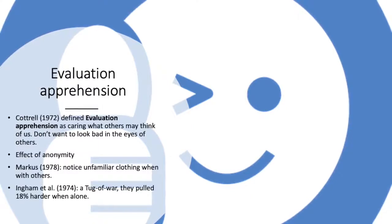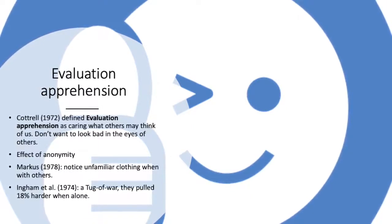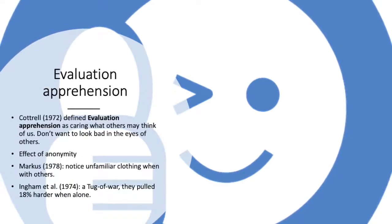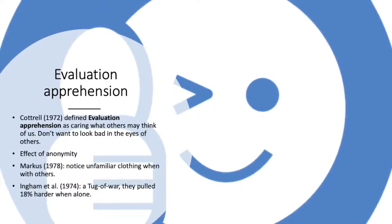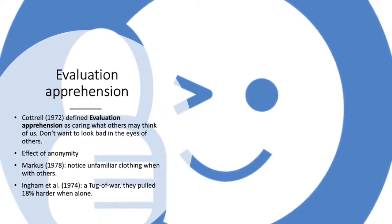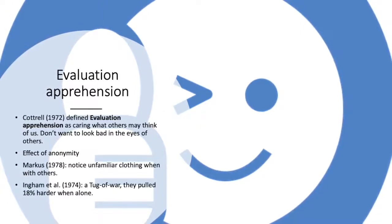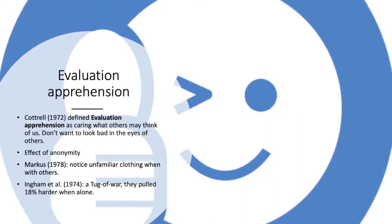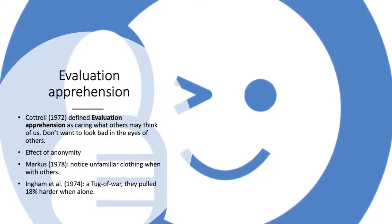This is because, as stated according to evaluation apprehension, individuals tend to be more aroused and think more about themselves, especially when wearing unfamiliar clothing with others, since we care deeply about how others perceive us. Ingham et al in 1974 found that when individuals were blindfolded and told they were alone or with others in a tug of war, they pulled 18% harder when alone — an example of social facilitation and evaluation apprehension.